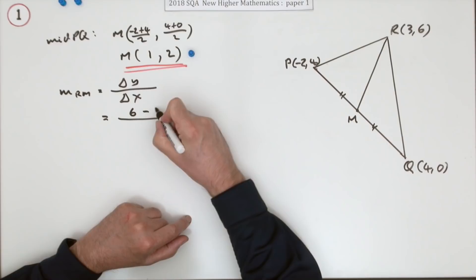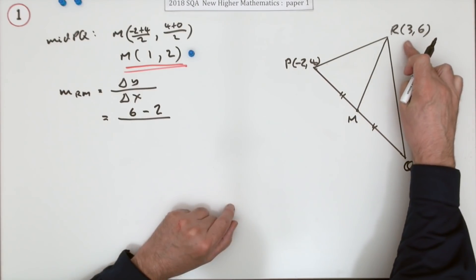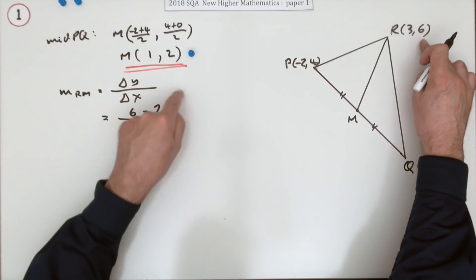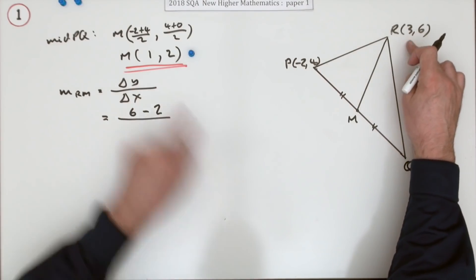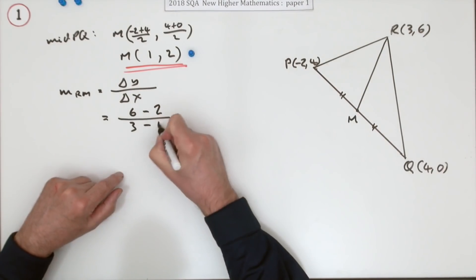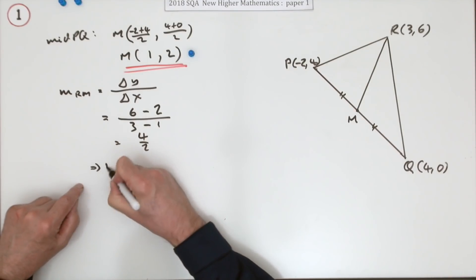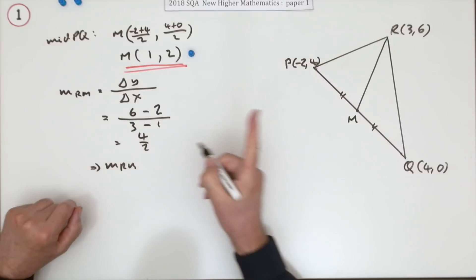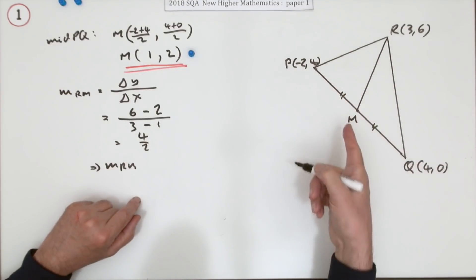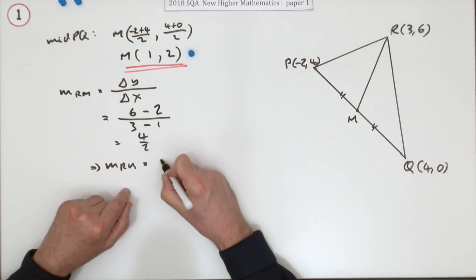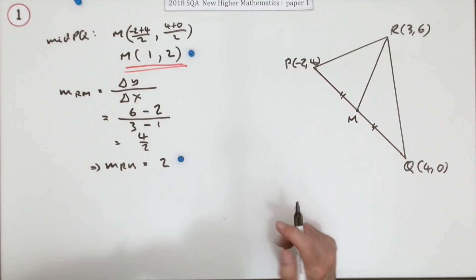y2 take away y1, difference in the y coordinates. Difference in x is in the same order. This take away that. This take away that. 3 take away 1, which gives you 4 over 2, meaning that the gradient of that line, that median, that line that goes to the middle, is going to be 2. That's the second mark.